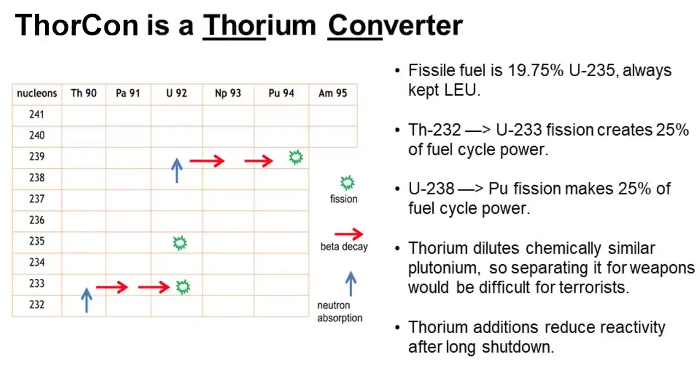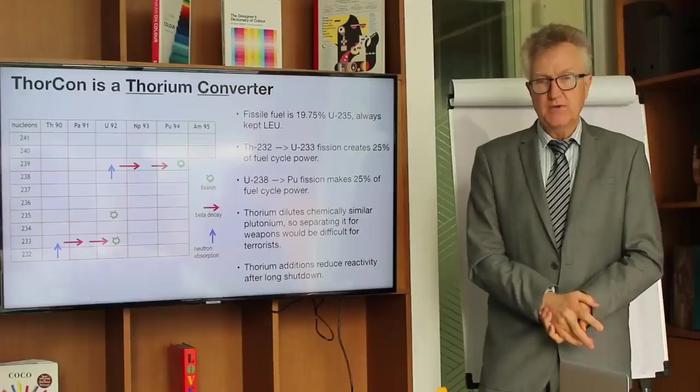It's quite difficult to get a breeder to really work. We're satisfied with a converter. It means that we have to keep adding fuel. We have to buy enriched uranium and keep adding it. Our primary concern is cost. In 50, 100 years, that is a problem that does need to be solved. But it's not a problem that needs to be solved today.